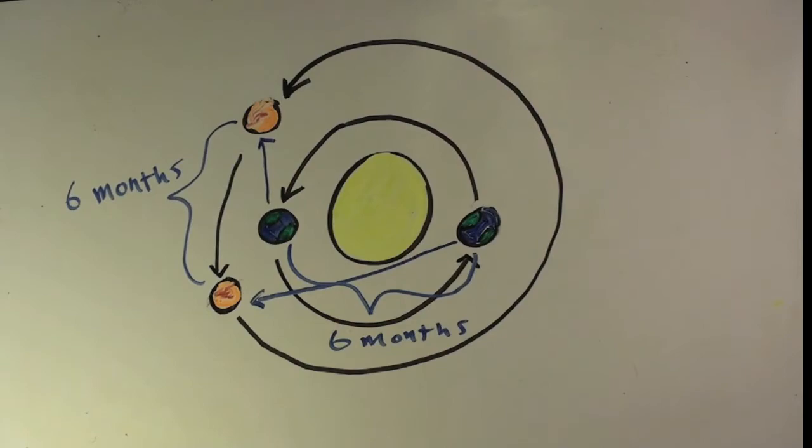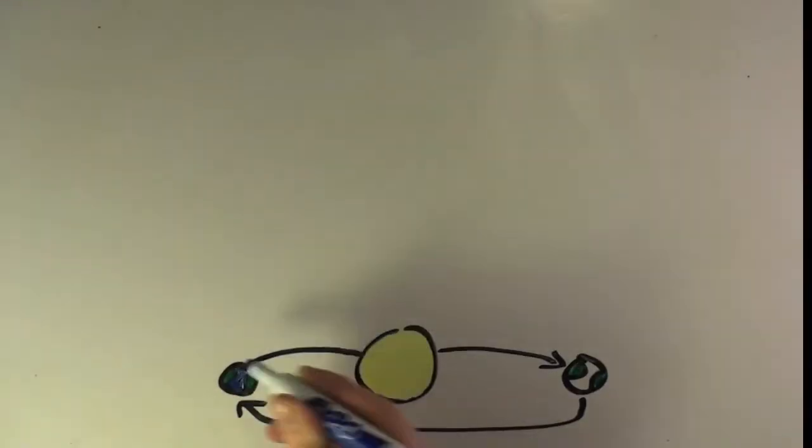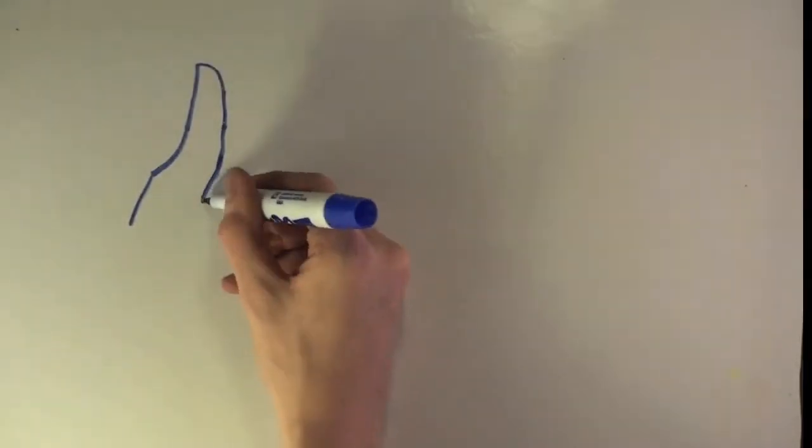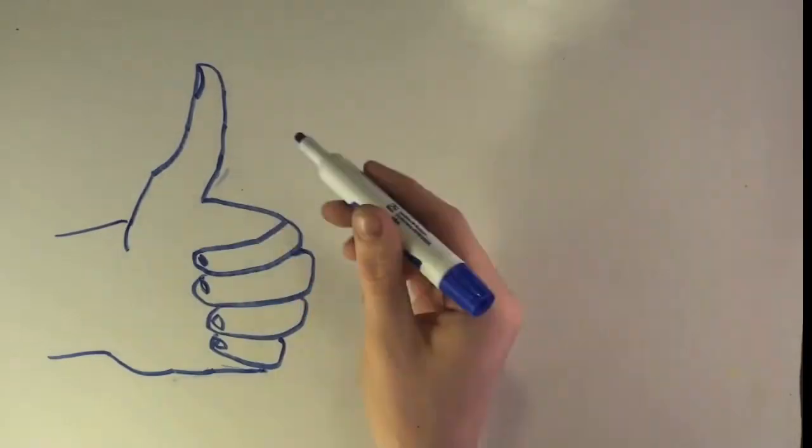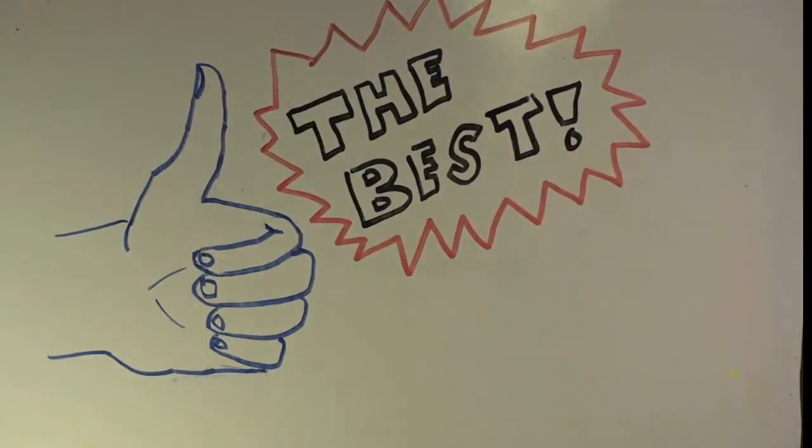Copernicus countered Aristotle's stellar parallax argument by hypothesizing that stars were too far away from Earth for parallax to be observed. Copernicus' heliocentrism was the best scientific model thus far, as it not only fulfilled all the criteria derived from observation, but was an extremely simple explanation.